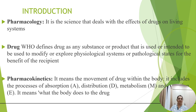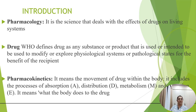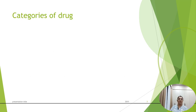Now, what is pharmacokinetics? Pharmacokinetics is the movement of the drug within the body. It includes the processes of absorption, distribution, metabolism, and excretion of the drug. In other words, it is what the body does to the drug.